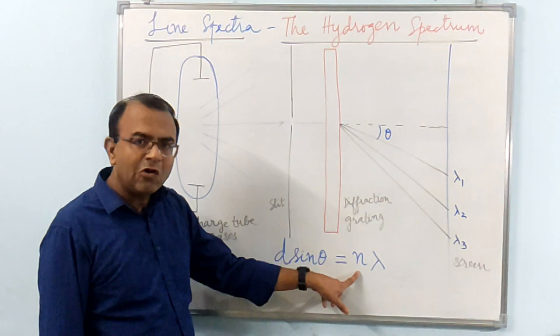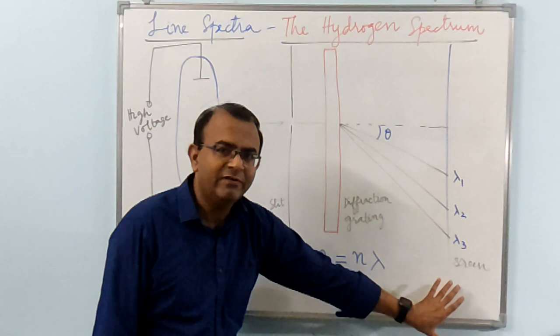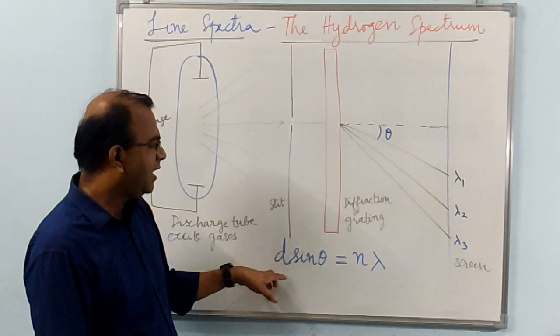You would get different orders. This corresponds to N equals 1, the first order, for all the wavelengths. Then for the second order, similarly, all the wavelengths you would get. For the third order, you will get all the wavelengths, and so on.